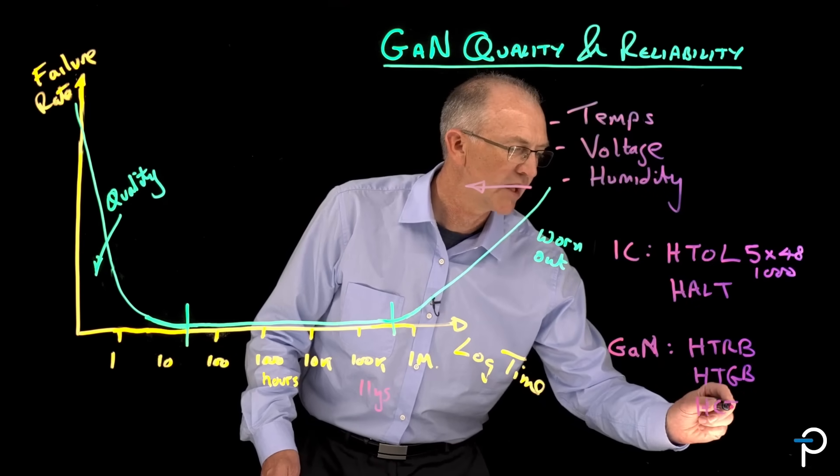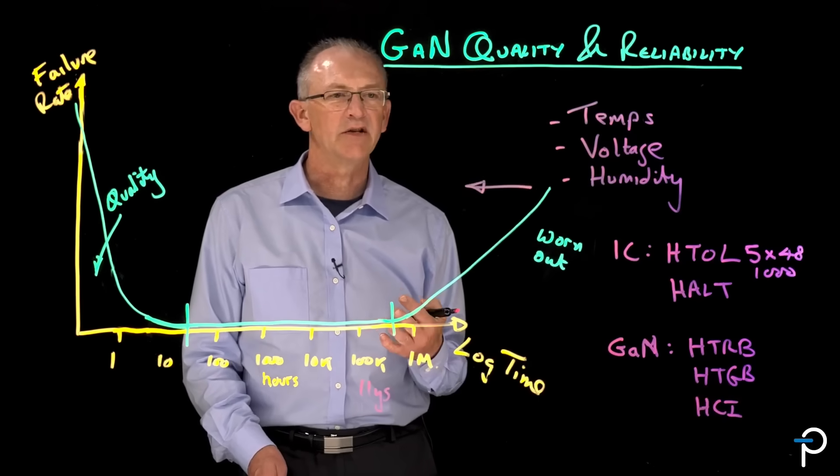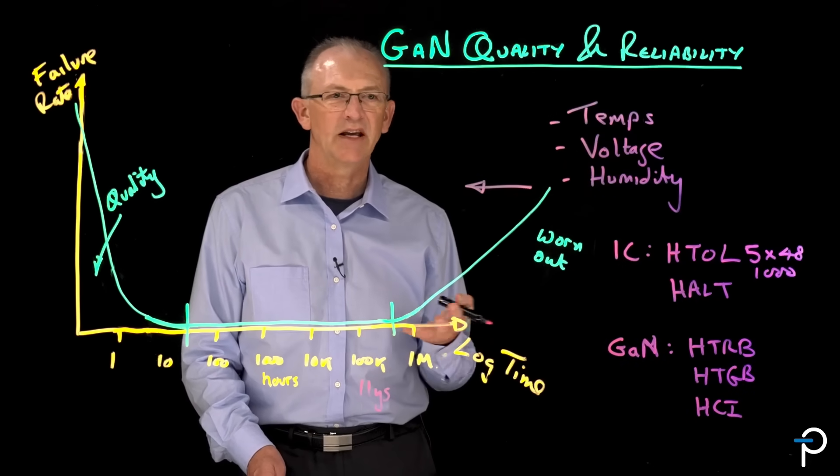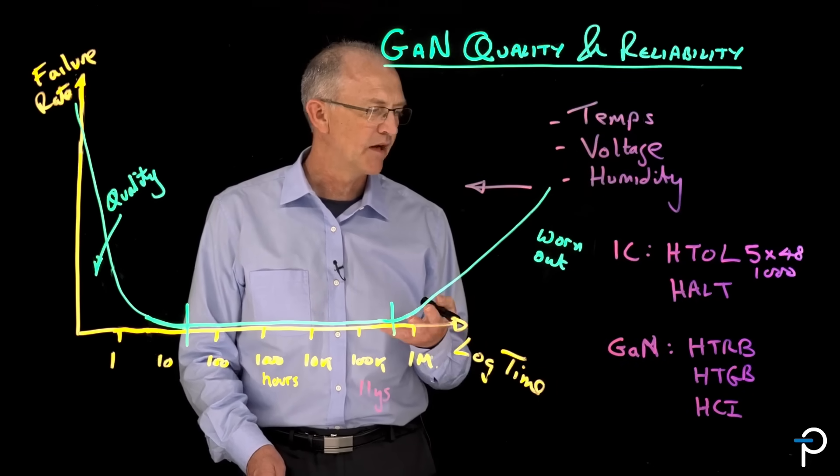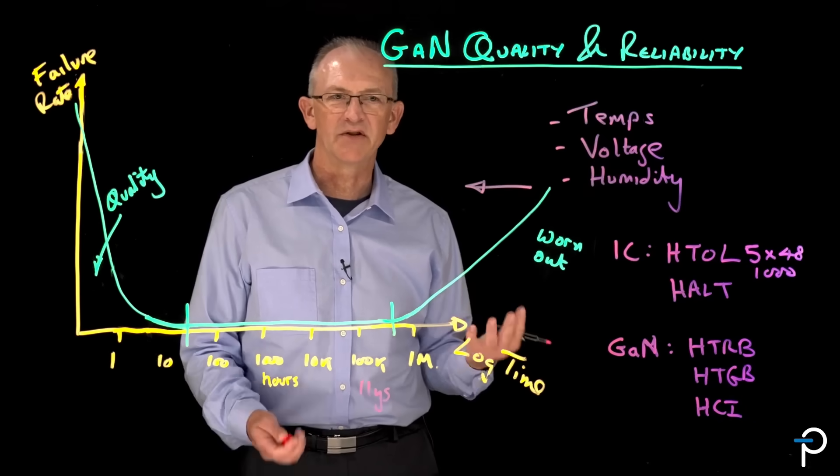We also do something called hot carrier test, and that's intended to find any traps where electrons in the channel can get diverted into oxides and become trapped.